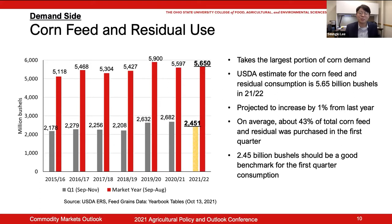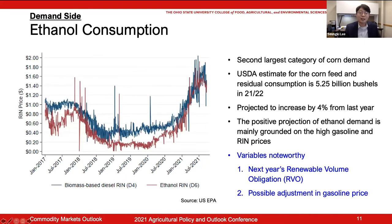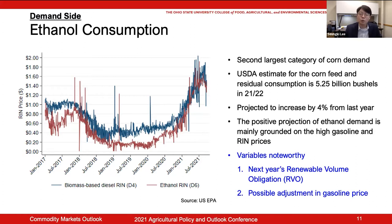The first demand category is corn feed and residual use — taking the largest portion of corn demand at about 38% last year. It's relatively tricky to get a precise prediction since the most relevant USDA data is released every quarter, and the first quarter record has not been announced yet. We can calculate target feed use using historical data. About 43% of total corn feed and residual is purchased in the first quarter over the last five years. By combining this with the estimated total corn feed of about 5.6 billion bushels, I propose 2.45 billion bushels as a reasonable benchmark to test if the USDA projection will likely be achieved.